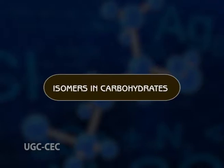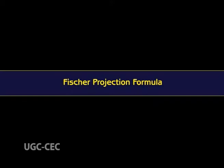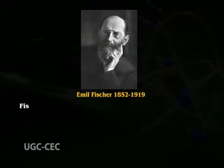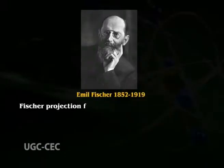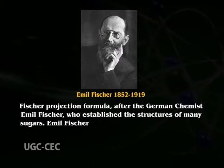Let's look at isomers in carbohydrates. First, the Fischer projection formula. To show the structures of a resulting molecule, we need to know the convention for a two-dimensional perspective of a molecular structure, which is called the Fischer projection formula, named after the German chemist Emil Fischer, who established the structures of many sugars.